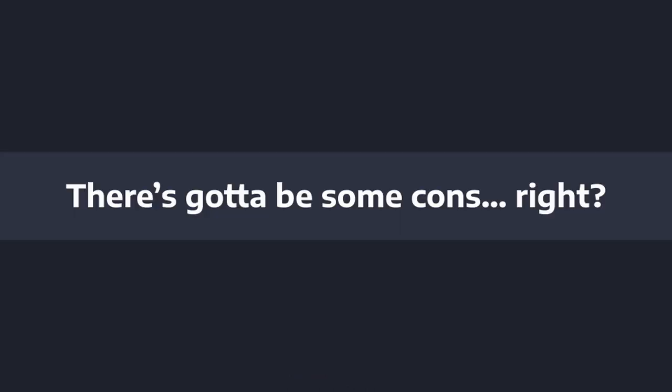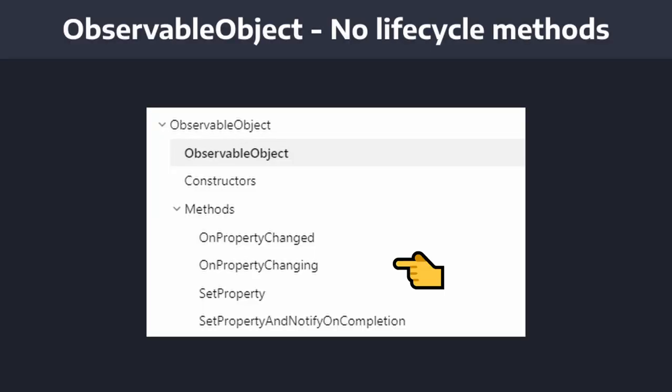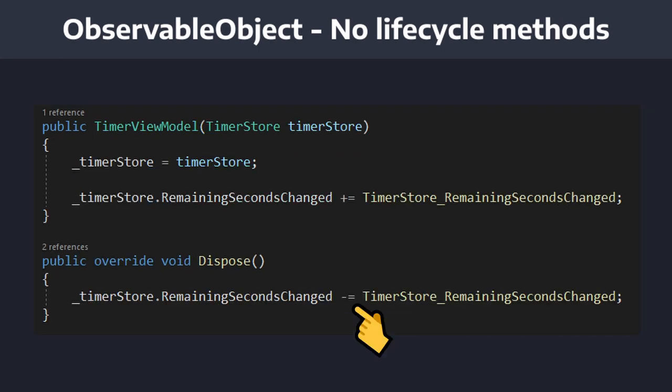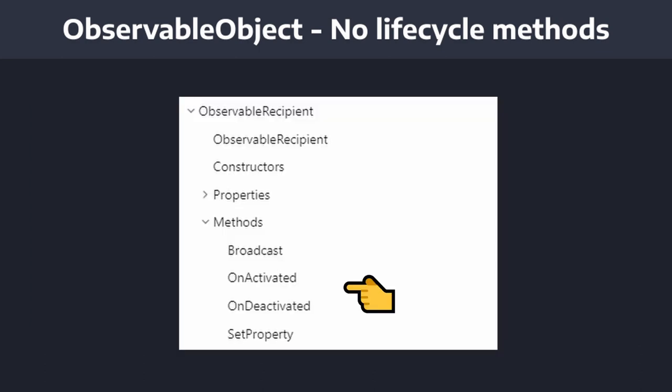Those are the exciting parts about the MVVM Toolkit, but I do have some concerns. I was concerned that ObservableObject didn't offer any lifecycle methods. I typically have my base view models implement IDisposable so I can dispose of them and clean up event subscriptions. On the contrary, I suppose I could just use ObservableRecipient and rely on the OnDeactivated method to do cleanup in my view models.